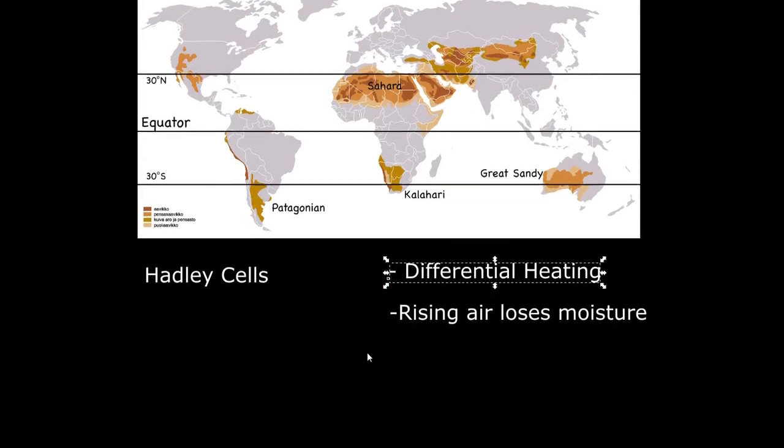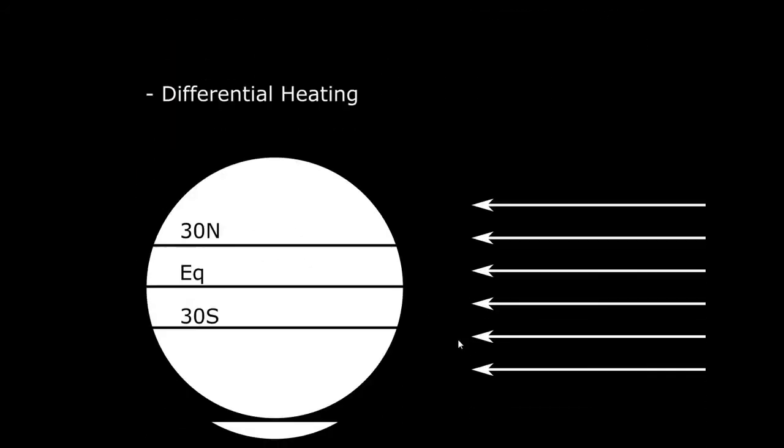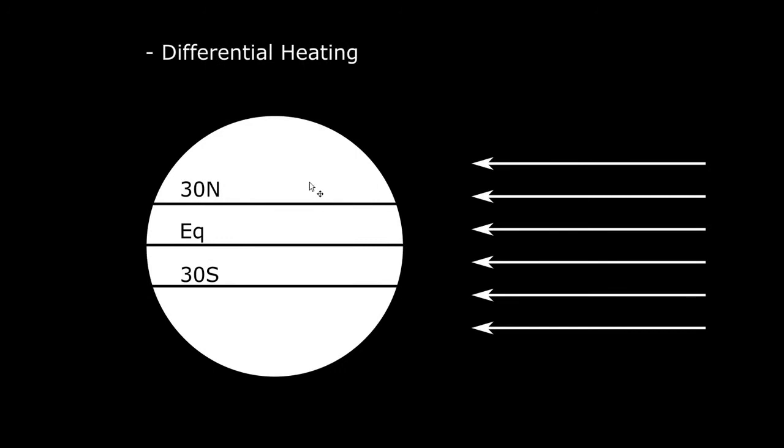So, let's discuss this differential heating. I'm going to scroll down now. And here I've drawn a representation of the Earth with the equator and 30 degrees north and 30 degrees south. And these arrows represent sunlight, radiation from the sun reaching the Earth.